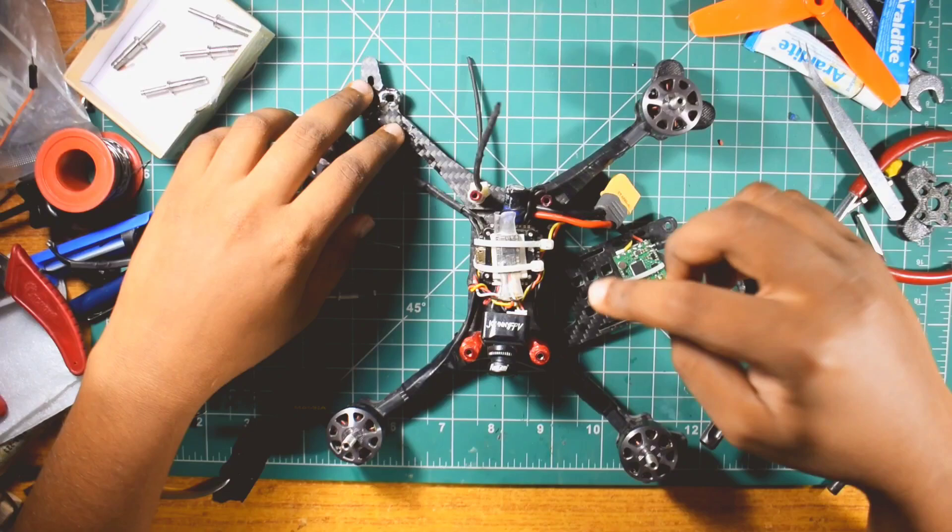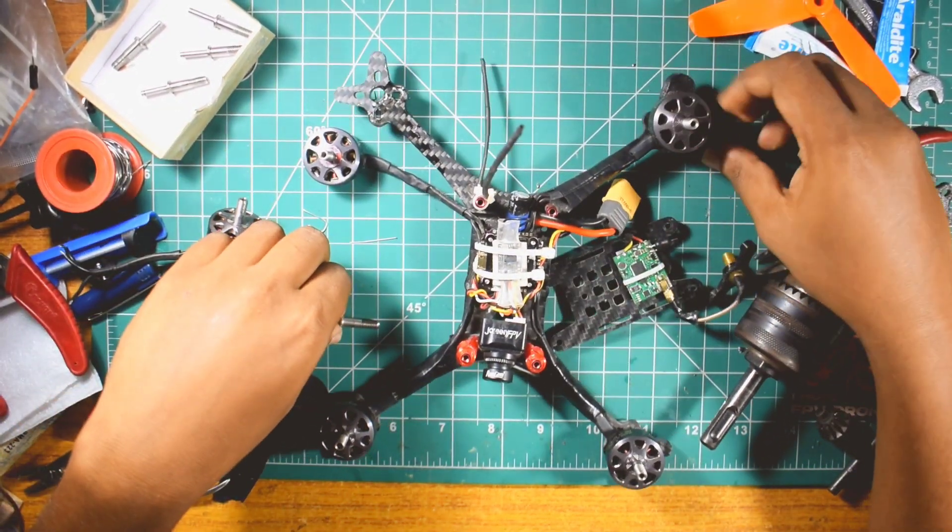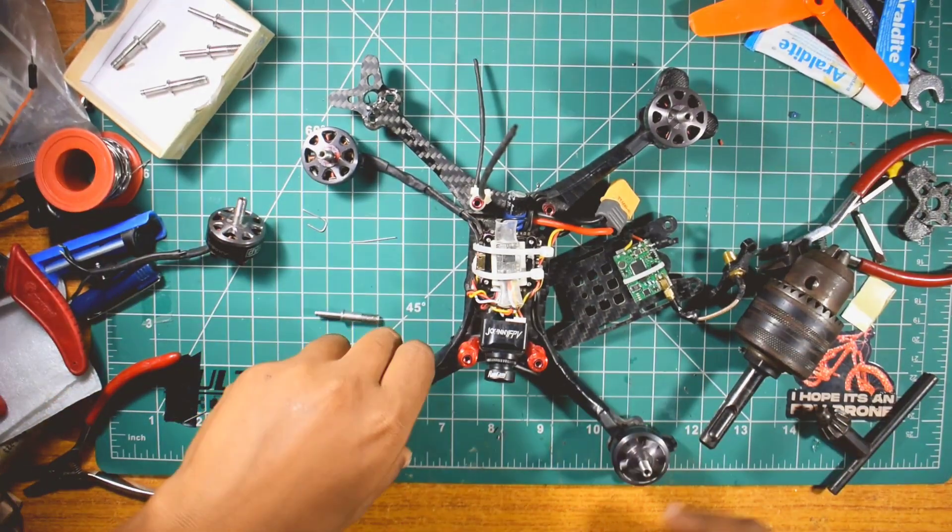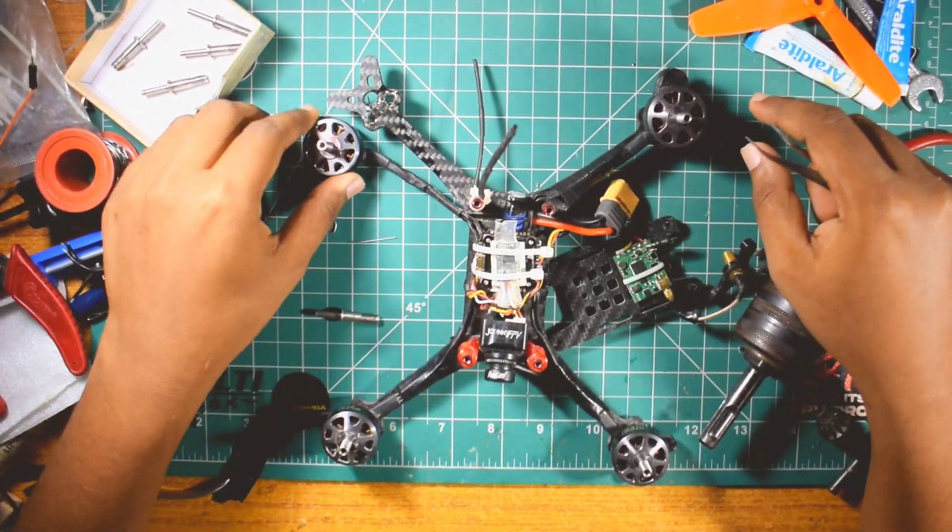Recently I crashed this drone badly and ended up with three bent shafts. One of which I corrupted and two more have to be corrected. I also ended up damaging one of the arms.